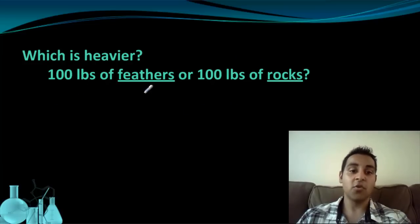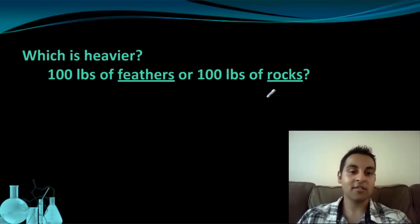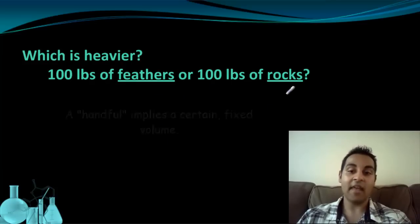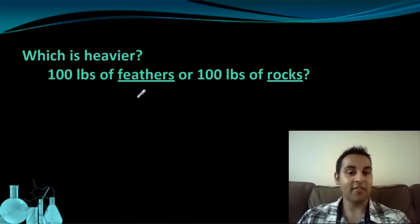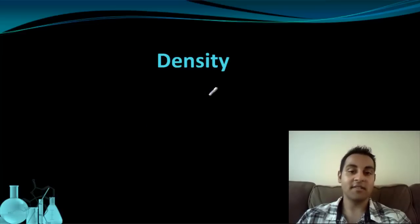If I had instead told you which would weigh more, a handful of feathers or a handful of rocks, everyone would get that question right without thinking twice. But what's the difference between asking that question and asking this question? Well, when I say you have a handful of feathers and a handful of rocks, what I'm really cluing you in on is the volume of feathers and the volume of rocks. And intrinsically, you understand that a rock is heavier than a feather. So a handful of rocks should be heavier than a handful of feathers. What you're doing there when you're making that assumption is you're relating mass to volume. And we actually have a way of representing the relationship between mass and volume. And that's called density.